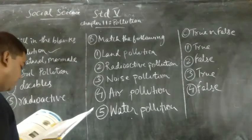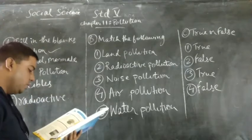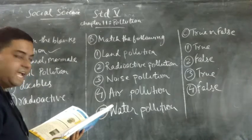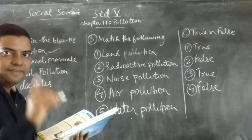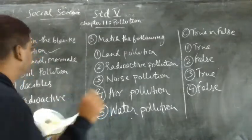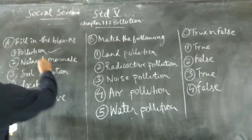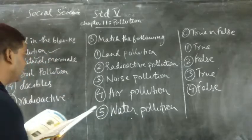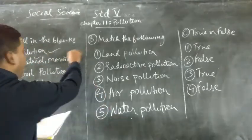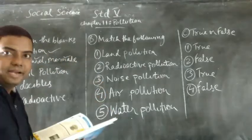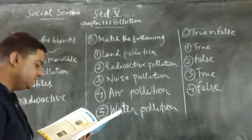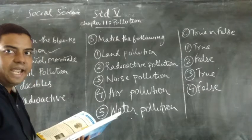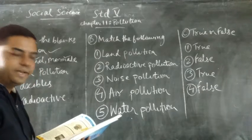Question number 2: Pollutants are of 2 types — dash and dash. We have 2 blanks. The first is natural and the second is man-made. That is, pollutants are of 2 types: natural and man-made.